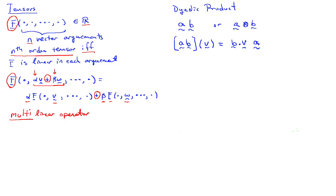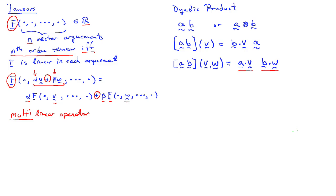In terms of the multilinear operator notation, I define a, b by its action on two vectors v and w as a dot v times b dot w. So a dot v is a number and b dot w is a number, and I just multiply those together. That's the consistent definition. The good thing about this second definition is it extends naturally to multiple dyadic products.